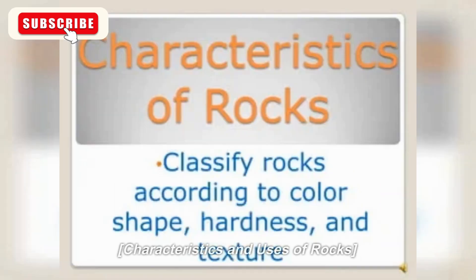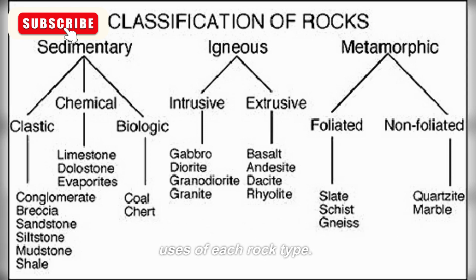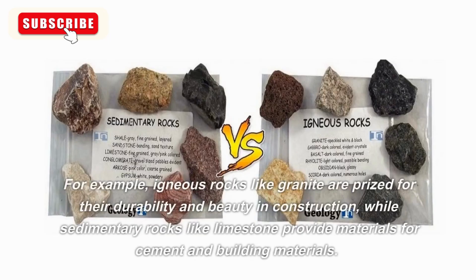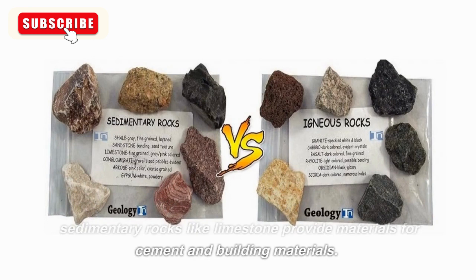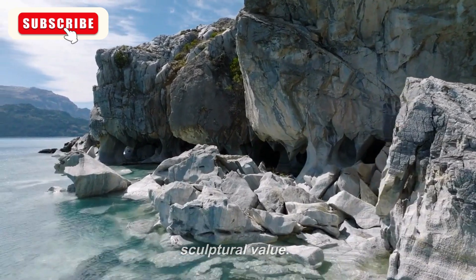Characteristics and uses of rocks. Each rock type has distinct characteristics that make them useful in various applications. For example, igneous rocks like granite are prized for their durability and beauty in construction, while sedimentary rocks like limestone provide materials for cement and building materials. Metamorphic rocks like marble have ornamental and sculptural value.